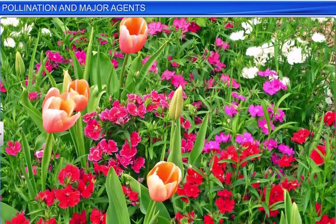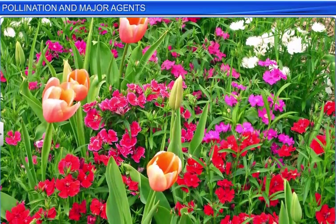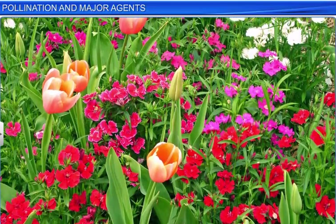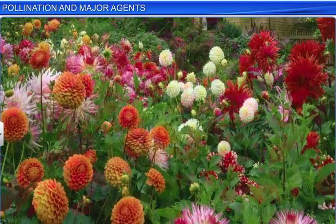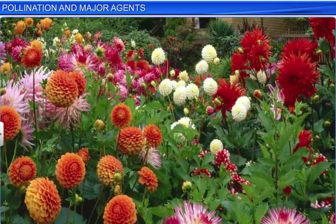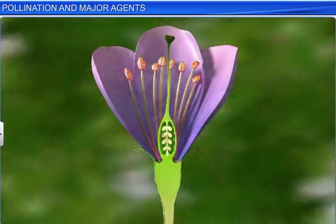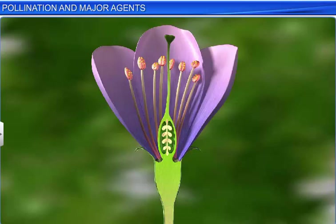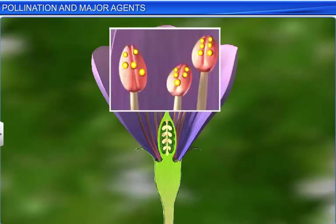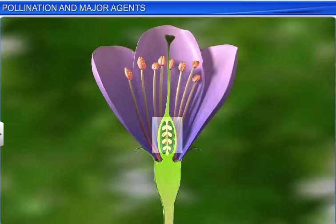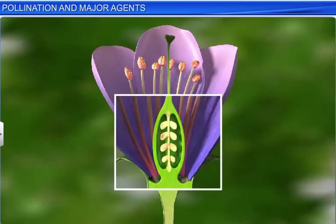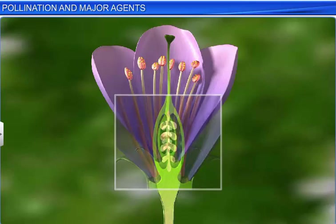Flowers are mainly responsible for bringing about fertilization and seed formation. To facilitate fertilization, it is necessary that the male gametes inside the pollen grains and the female gamete inside the ovule are brought together.